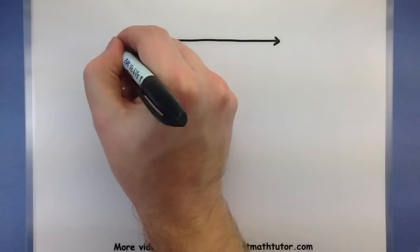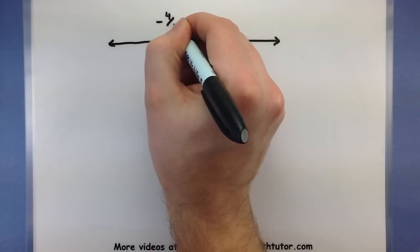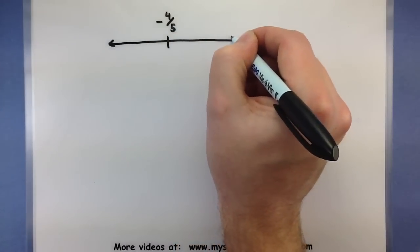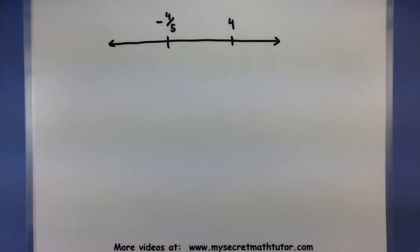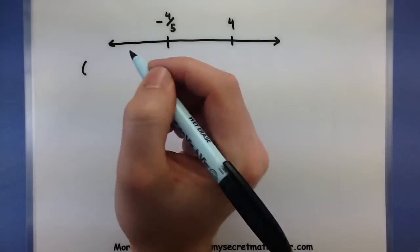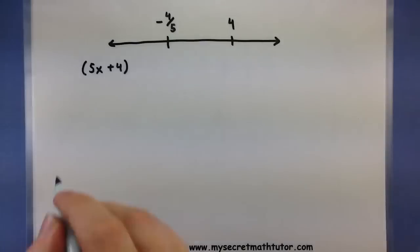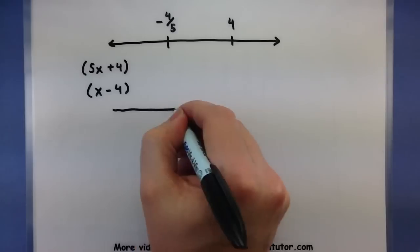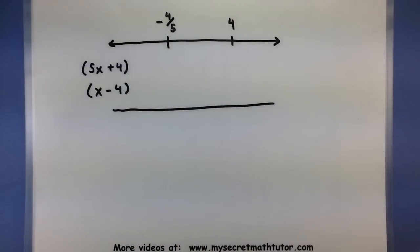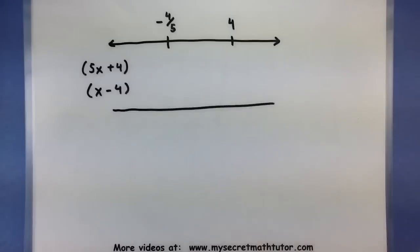Let's quickly make a number line, and on it I will put negative 4/5 and 4 — those were our key values where the quadratic equals zero. Along the side we'll put those factors: 5x + 4 and x − 4. Now what we want to do is take test points around these key values in those intervals and test them in our factors to see whether they are positive or negative.